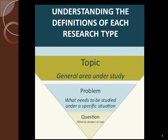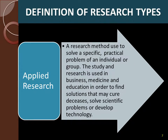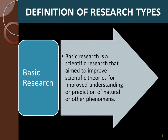Let's see these definitions. Applied research is used to solve a specific practical problem of an individual or group. This type of research is useful for developing new systems and procedures in specific areas. Basic research has been used to improve scientific theories.